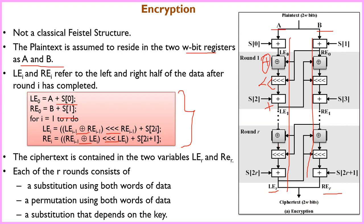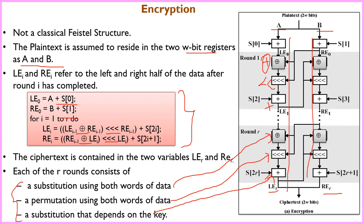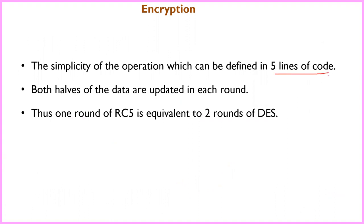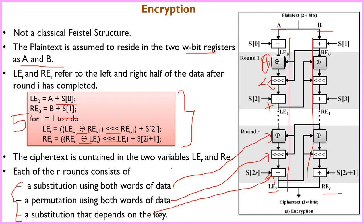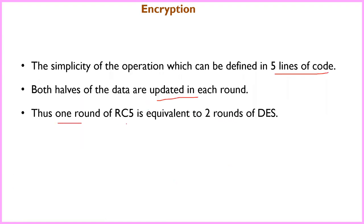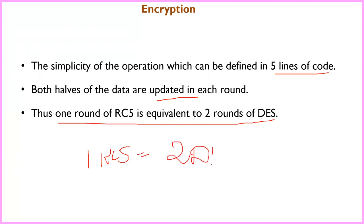This is a substitution that uses both words of data. XOR is used as substitution, circular shift is used as permutation, and addition with the key is a key-dependent substitution. In three activities per round — XOR, circular shift, and addition — you proceed to the second round. The encryption process is complete in five lines of code per round. Left half and right half are each updated over time. Importantly, one round of RC5 is equivalent to two rounds of DES.